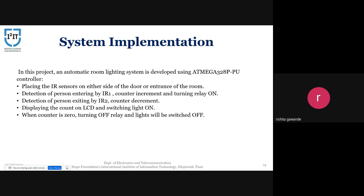When a person tries to leave the room, sensor 2 detects the person first and then sensor 1, and it will decrement the count of visitors. When the count reaches zero, the light will be automatically turned off, indicating no one is present in the room.